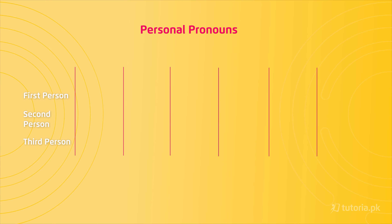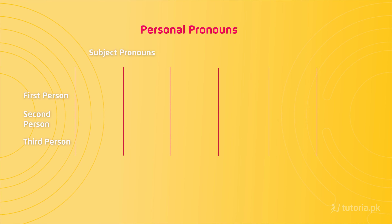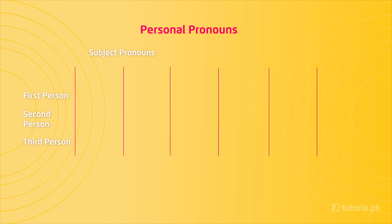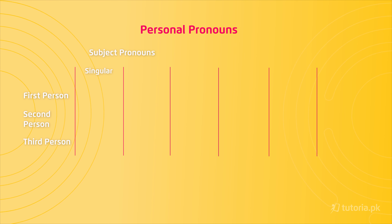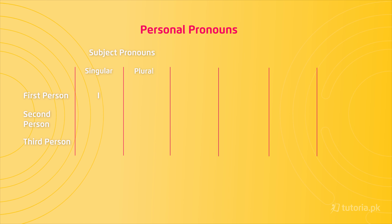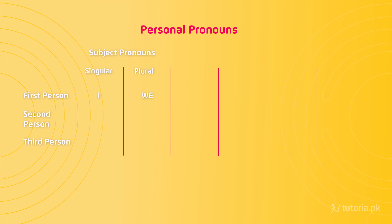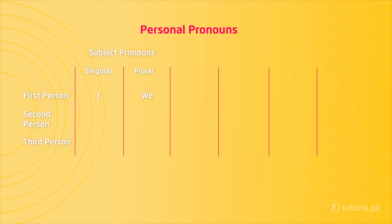Let's see their cases. Subject pronouns: when you have to use the first person in the subject and your subject is singular, then you will use 'I', and if it is plural, then you will use 'we'. And if you have to use the second person in the subject pronoun, then you will use 'you' for both singular and plural.